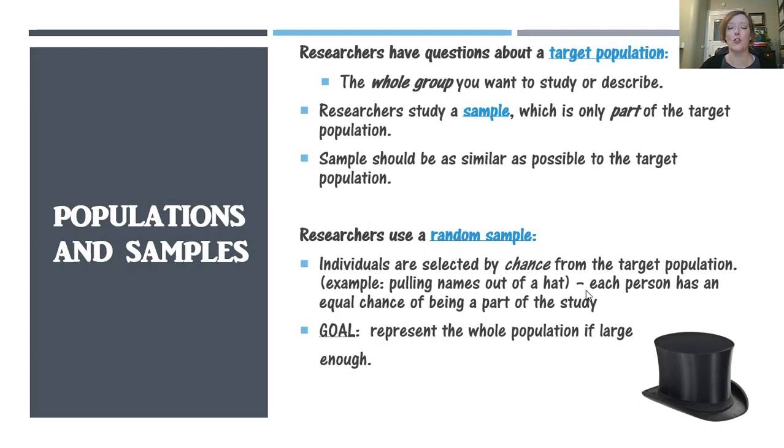So when a researcher has a question, they usually have a question about a certain group of people or even animals. This is called the target population. So you have a question about a target population. This is the whole group that you have that question about that you want to study and get answers for. But it would be very, very difficult to get information from that whole target population. Let's say you have a question about what is America's favorite ice cream flavor. Well, it would be very difficult to find out that information because we can't possibly survey all Americans.